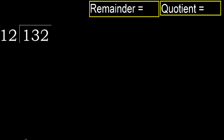132 divided by 12. 1 is less, therefore next. 13 is not less, therefore with 13. 12 multiplied by which number is nearest to 13 but not greater?